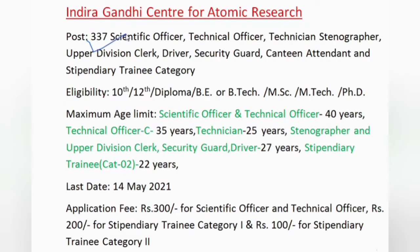337 Scientific Officer, Technical Officer, Technician, Stenographer, Upper Division Clerk, Driver, Security Guard, and Canteen Attendant Post Vacancy in Indira Gandhi Centre for Atomic Research. Eligibility: 10th, 12th, Diploma, BE or B.Tech, MSc, M.Tech, or PhD. Different age limits for different posts. Last date for application: 14 May 2021. Application fees: Rs. 300 for Scientific Officer and Technical Officer, Rs. 200 for Stipendiary Trainee Category 1, and Rs. 100 for Stipendiary Trainee Category 2.